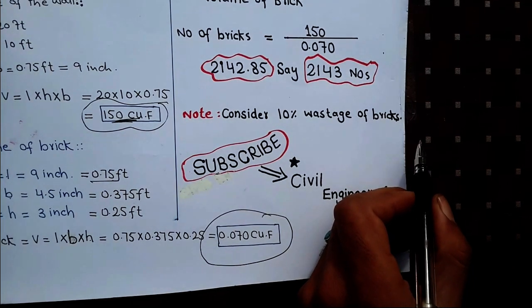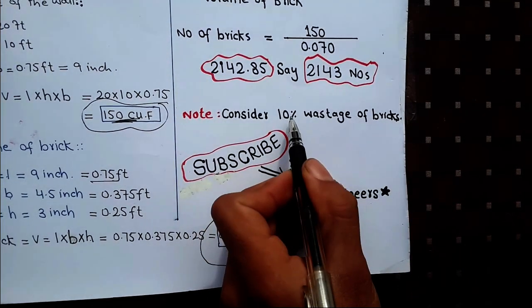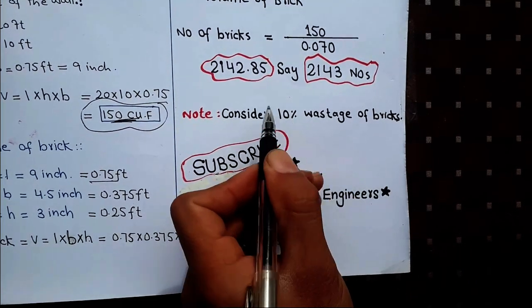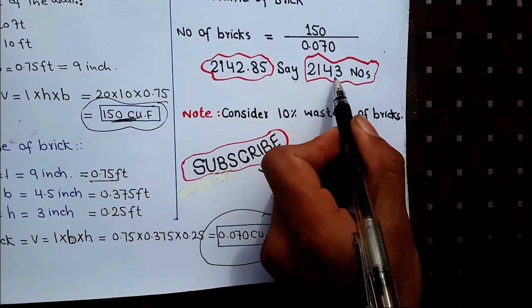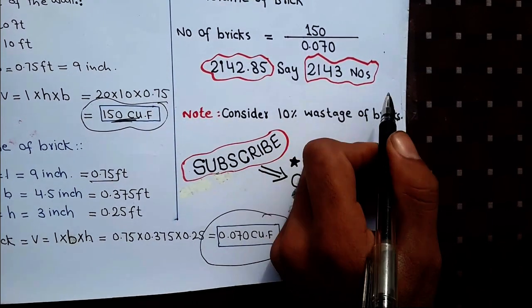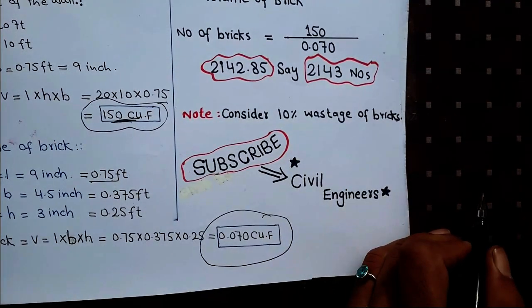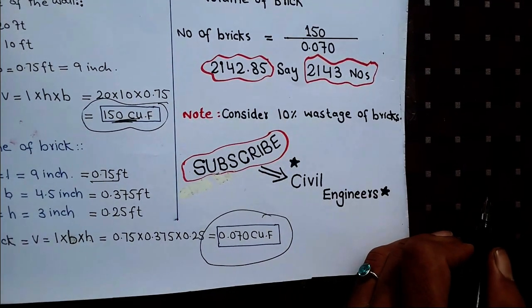Note: consider 10% wastage of bricks. So for every 100 bricks, you should account for 10 additional bricks as wastage. Add 10% of the total brick count to your final number.